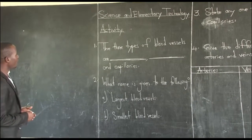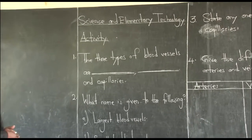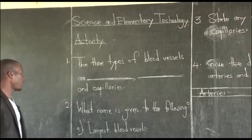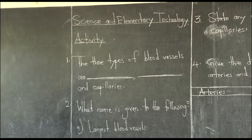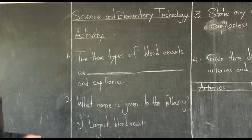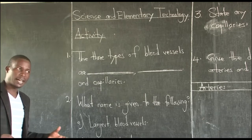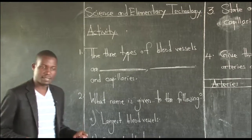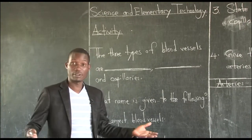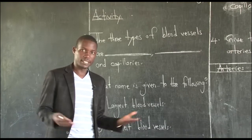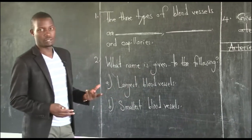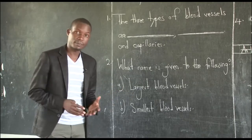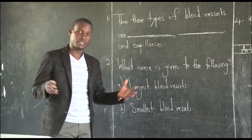Number one says: the three types of blood vessels are dash, dash, and capillaries. We have been given one of them, so we need to understand what blood vessels are. Simply, as we discussed last time, blood vessels are tubes that carry blood around the body. We looked at capillaries, arteries, and veins as blood vessels — majorly three.